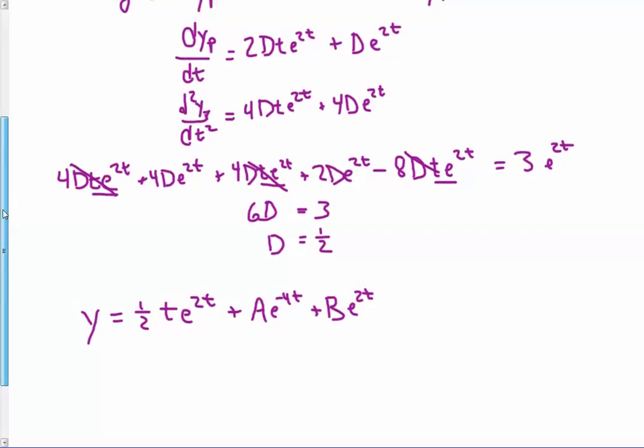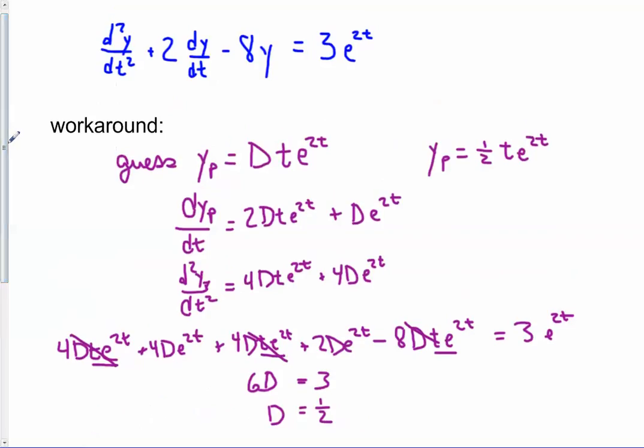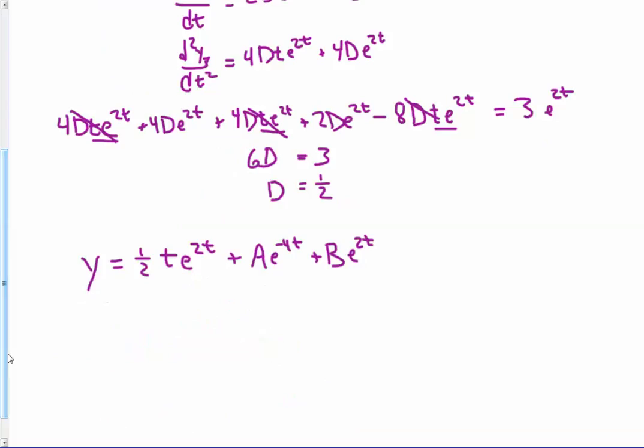So this is a special case, and it only is what you do, you do this kind of guess, if that forcing term, that f of t on the right, is sort of coincidentally also a homogeneous solution. And then you have to do this to get things to work.